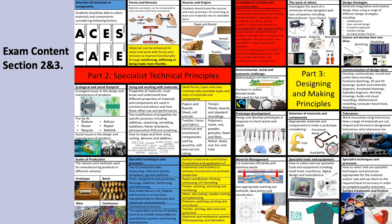Section two is about 30% of the exam and that's looking at specialist technical principles, where you will be looking at forces and stresses, the sources and origins of materials, and using and working with materials. All of the questions in this section can be answered using textiles as your example material. Then part three, on the right-hand side of the slide, is actually 50% of the exam. The first question in this section will be a big product analysis question and it won't necessarily be a textiles product — it could be a school stacking chair or an Apple Watch — but it's the principles of design that you're being examined on.